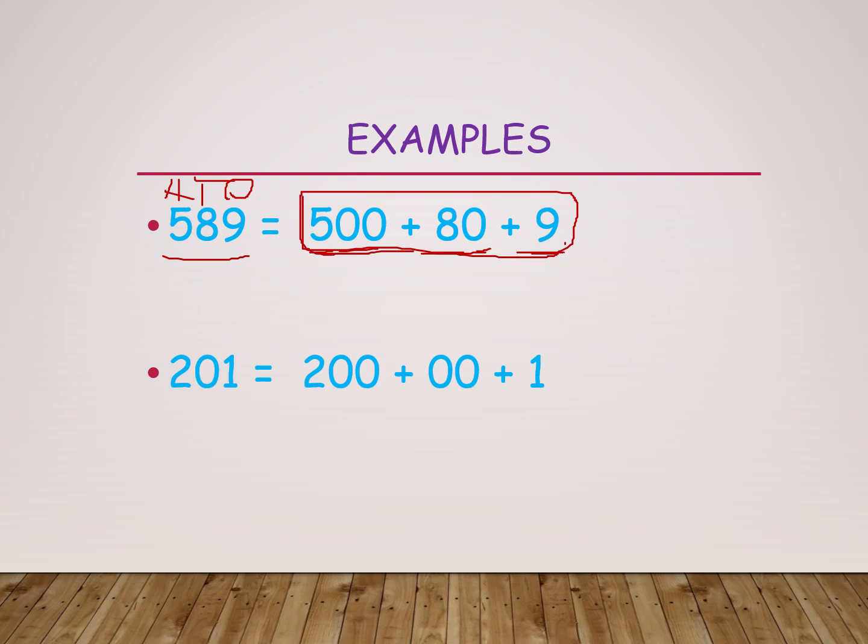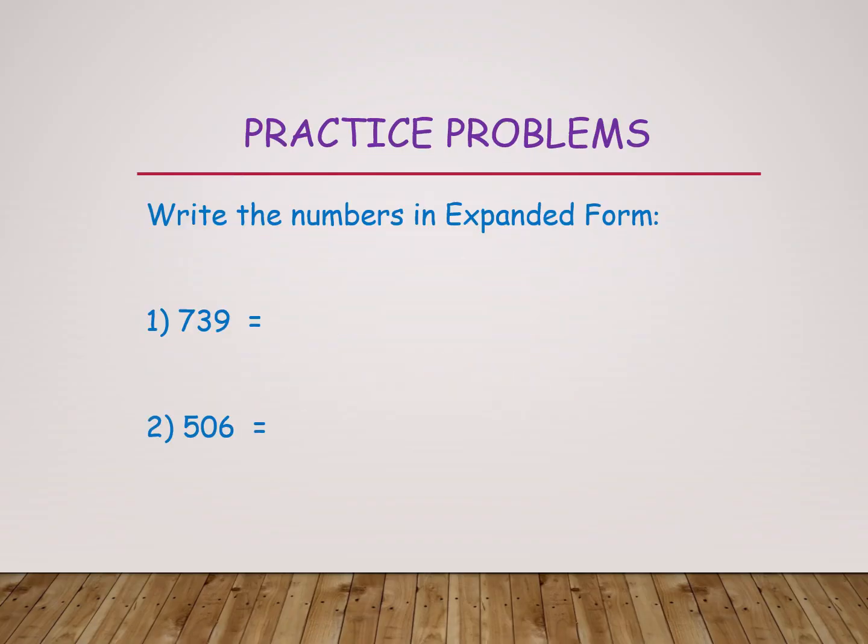Like that, another number here, 201. Here also we can write 100s, 10s and 1s. Here 2 in 100s place, that's why 200. Here 0 in 10s place, that's why we are putting two zeros, 0 into 10 is 0. And 1 in 1s place, 1 into 1 is 1. Total 201. This is the expanded form of the given number 201.